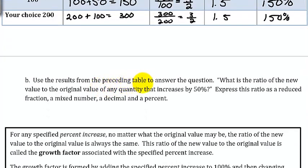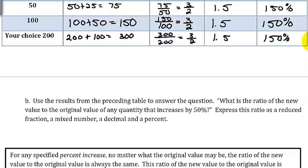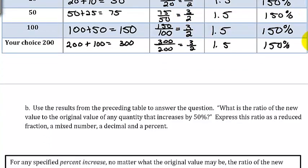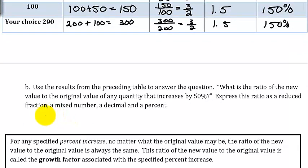Using the results from the table: what is the ratio of the new value to the original value of any quantity that is increased by 50%? Express this ratio as a reduced fraction, a mixed number, and a decimal. No matter what value you pick, the ratio is always 3 halves, giving a decimal of 1.5 and a percent of 150%.